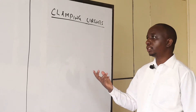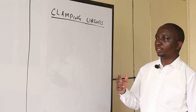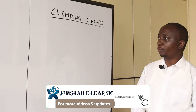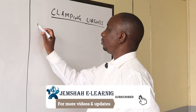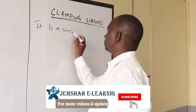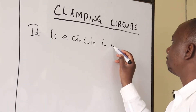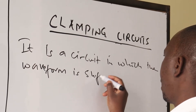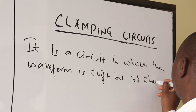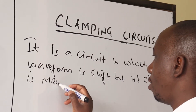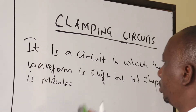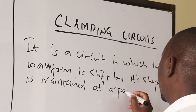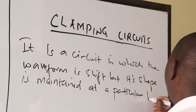It is applicable when we want to put the level of a voltage to a different state so that we are able to operate a circuit. It is a circuit in which the waveform is shifted, but its shape is maintained at a particular level.